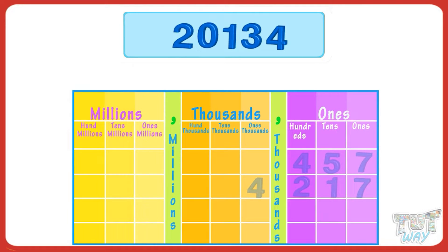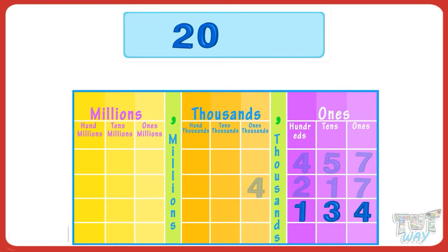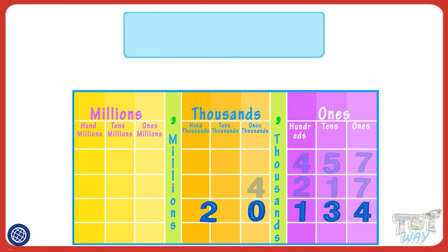Here we have a number. First, write it below the place value chart, starting with the ones place: four below ones place, three below tens place, one below hundreds place, zero below thousands place, and two below ten-thousands place.